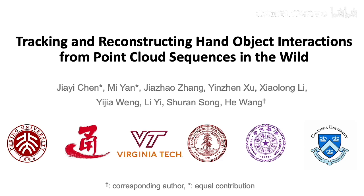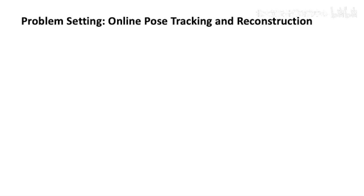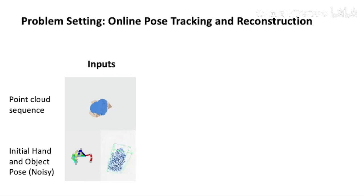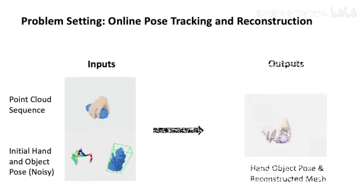In this video, we introduce our AAAI 2023 work: Tracking and Reconstructing Hand-Object Interactions from Point Cloud Sequences in the Wild. We tackle the problem of online pose tracking and reconstructing hand-object interactions. From a live point-cloud sequence, given the segmented hand and object along with a noisy initial hand pose and object pose, our method can jointly track hand-object poses and reconstruct their shapes. Different from previous work, we don't assume known hand and objects and can track without knowing the ground-truth object mesh.